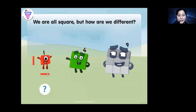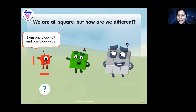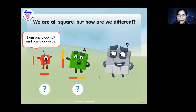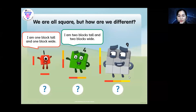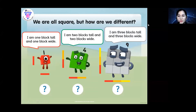How are they different? So this one is one square, this one is four, and this one is nine. Can you see that? We have here one side and one side. We have one, two, three, four. And the last one is nine. I am three blocks tall and three blocks wide.